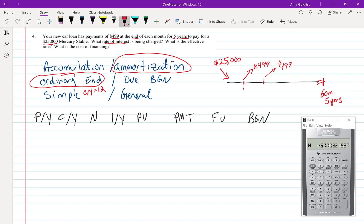So let's start with PY and CY both being 12 because we're making those monthly payments, 60 of them. We're trying to find the interest rate. We started by owing $25,000 and we're making payments of $499. Those are negative because our balance is shrinking. At the end, we owe nothing on the car and we're paying at the end of the month.